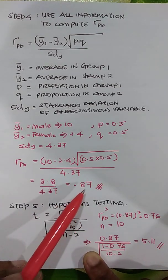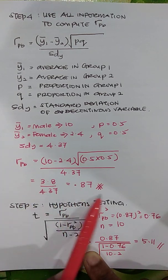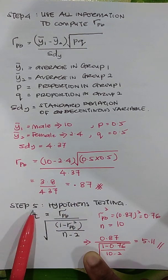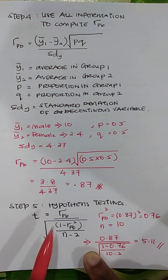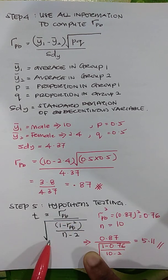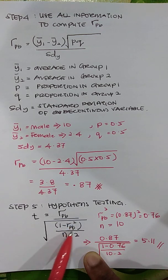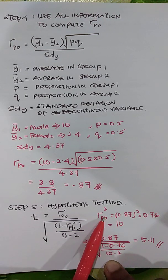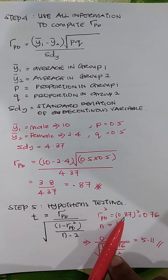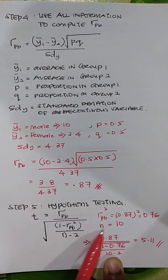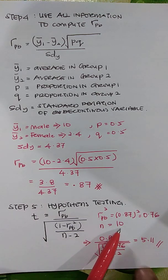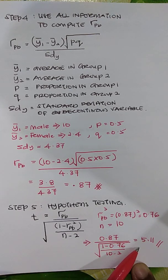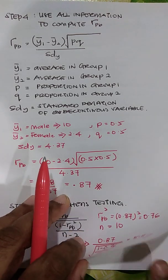We need to test whether this is a significant relationship, so we convert r_pb into a t-score. The formula is: r_pb divided by the square root of (1 minus r_pb squared), divided by n minus 2. Our r_pb is 0.87, so r_pb squared is 0.76, and n is 10. Solving this gives a t-statistic of 5.11.